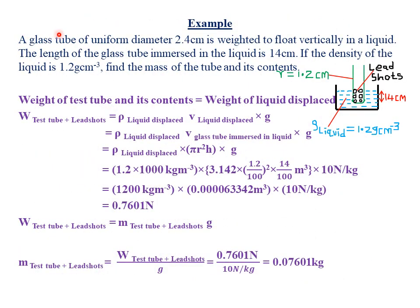Let's look at an example: a glass tube of uniform diameter 2.4 cm is weighted to float vertically in a liquid. The length of the glass tube immersed in the liquid was 14 cm. If the density of the liquid was 1.2 g/cm³, find the mass of the tube and its content — that is, the mass of the glass tube plus the lead shots.